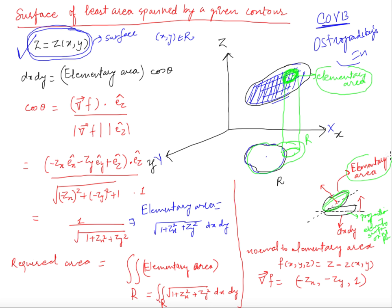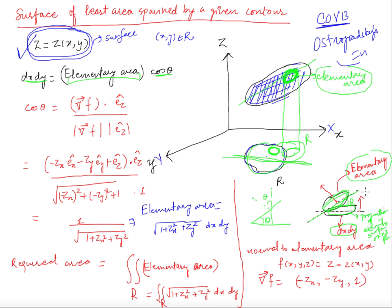What is the relation between this elementary surface and dxdy? The elementary area in the XY plane will be dxdy. If theta is the angle between the surfaces, then dxdy equals the elementary surface area times cos(theta). The angle between two surfaces is the same as the angle between their normals, so instead of finding theta directly, we find the normal to this elementary surface and the normal to the XY plane.